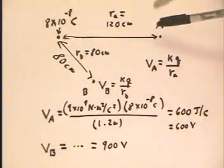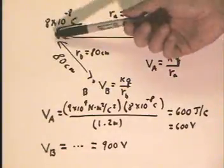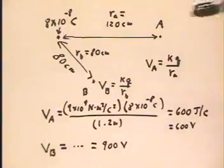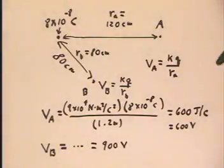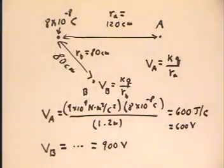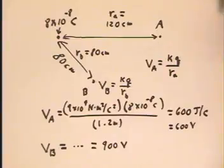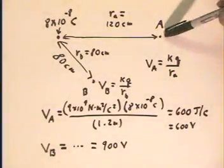Point A lies 120 centimeters from this 8×10^-8 Coulomb charge. How much work does it take per unit charge to bring some charge, some unspecified charge, in from infinite distance and slide it on into point A? It doesn't really matter what path we use to bring the charge in.